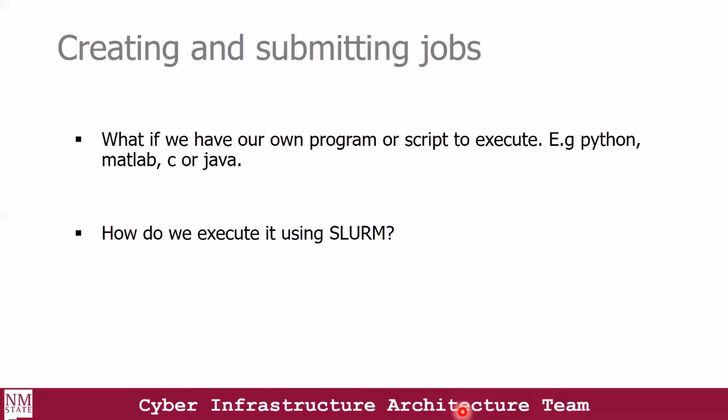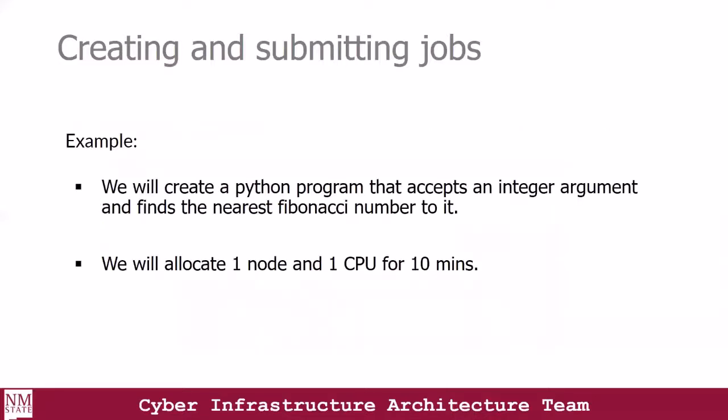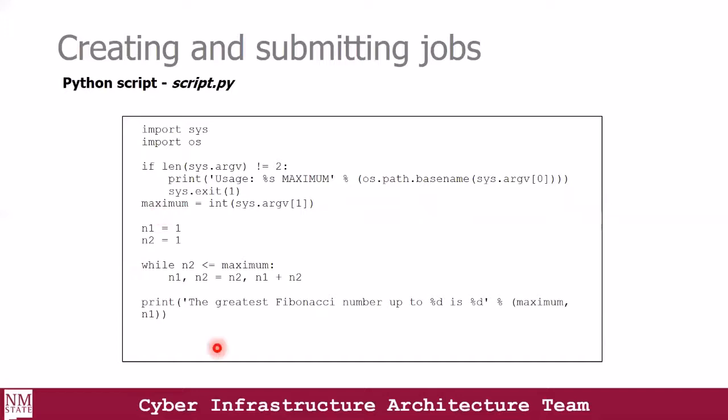What if we have our own program or script to execute — a Python script, a C script, or an R script? How do we run it alongside SLURM? We're going to look at an example where we create a Python program that accepts an integer as an argument and finds the nearest Fibonacci number to it. In our batch script, we're going to allocate one node and one CPU for a wall time of 10 minutes. This is what our Python script looks like: it accepts an integer argument and finds the greatest Fibonacci number closest to the value provided.